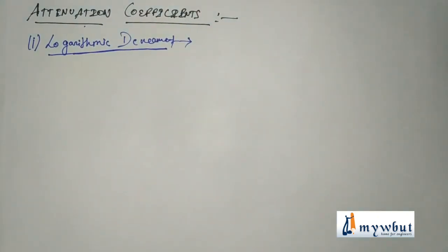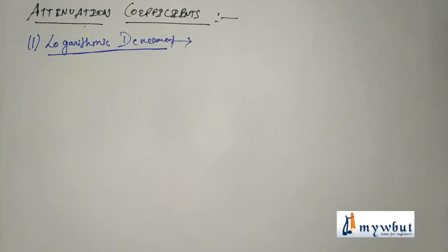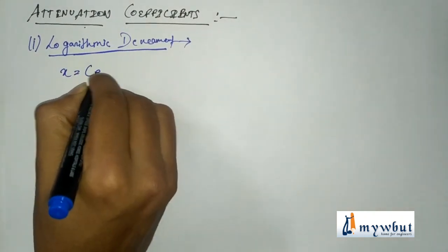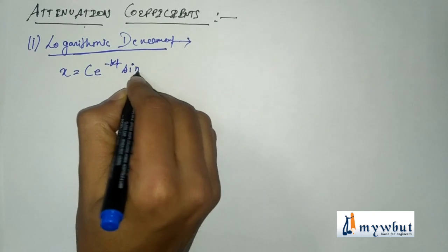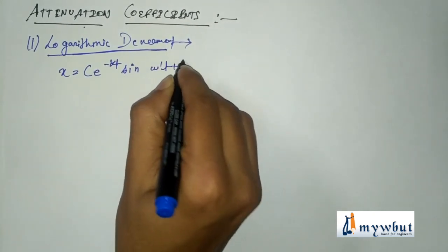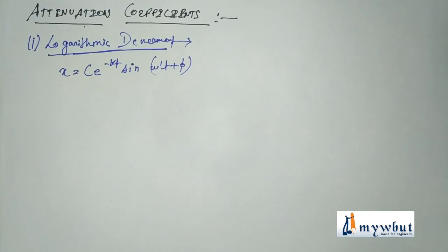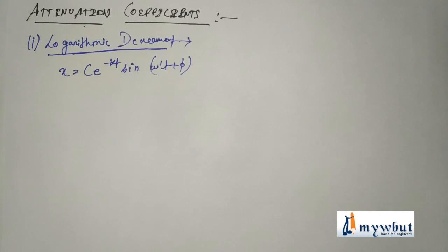In damped oscillatory motions, the displacement of the vibrating body at any time can be given as x equal to c e to the power minus kt into sine of omega dash t plus phi. The amplitude of vibration at time t is c into e to the power minus kt. The energy will decay as the square of amplitude, that is e to the power minus 2kt, with time.